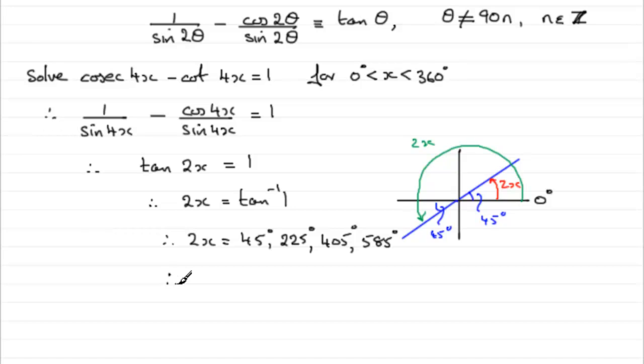But because we're dividing each of them now by 2, it's going to pull it back within this range here. So half of 45 degrees is 22.5 degrees. Half of 225 is 112.5 degrees. Half of 405 is 202.5 degrees. And finally half of 585 degrees is going to be 292.5 degrees.